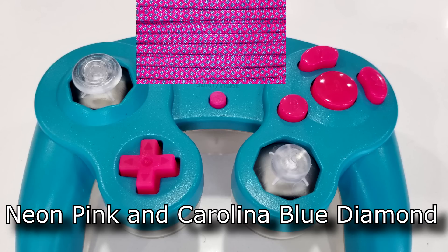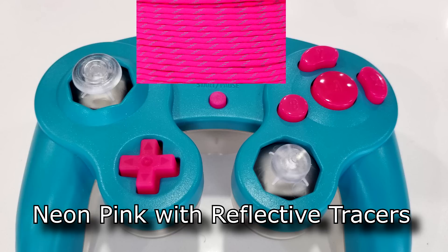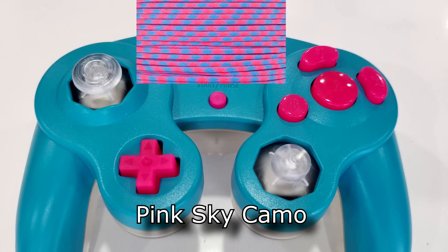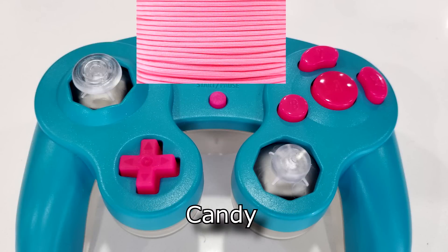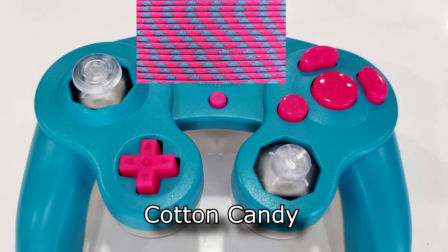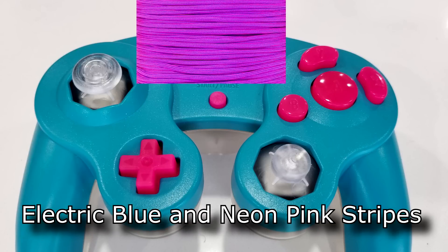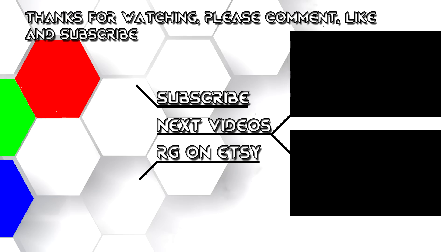But now guys, I need your help. It's time to figure out what kind of paracord we're going to do. So the first option is neon pink and Carolina blue diamond. Next is neon pink with reflective tracers, pink sky camo, candy, cotton candy, and electric blue and neon pink stripes. So leave your vote in the comments section below. If you enjoyed this video and you missed any of the other ones, make sure you check out the next video over here. Otherwise guys, I'll catch you for the next one here soon.